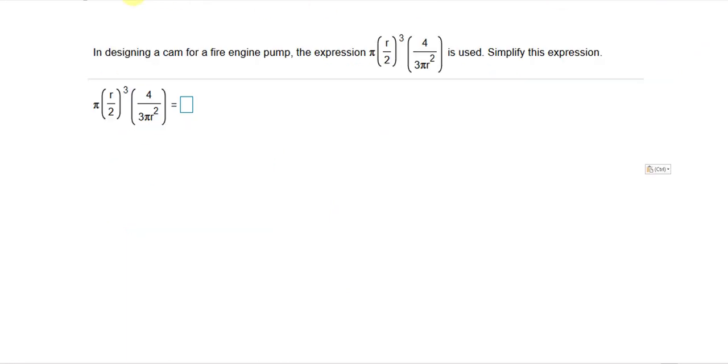The next question is question number 10 on section 1.4 as well. In designing a camp for a fire engine pump, the expression pi R over 2 altogether to the third power multiplied by 4 over 3 pi R squared is used. Simplify the expression.